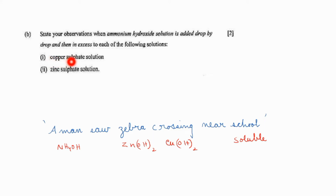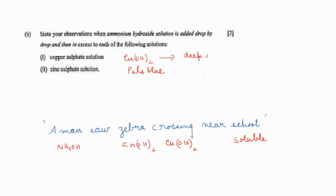So what will be the observation when ammonium hydroxide is added to copper sulfate solution? Initially you will be getting a pale blue precipitate of copper hydroxide. If you are adding excess of ammonium hydroxide, the precipitate will be soluble and the solution will turn into a deep inky blue solution. This is the observation of the reaction.